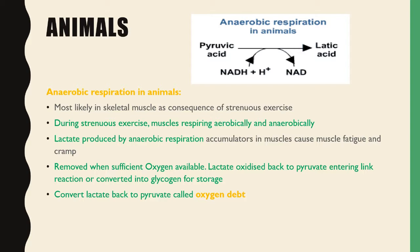Anaerobic respiration in animals occurs mostly in skeletal muscles as a consequence of strenuous exercise. During strenuous exercise, muscles respire both aerobically and anaerobically. Lactic acid produced by anaerobic respiration accumulates in the muscle, causing fatigue and cramp. This lactate is then removed when sufficient oxygen becomes available, and it is oxidized back to pyruvate, which enters the link reaction or is converted into glycogen for storage.